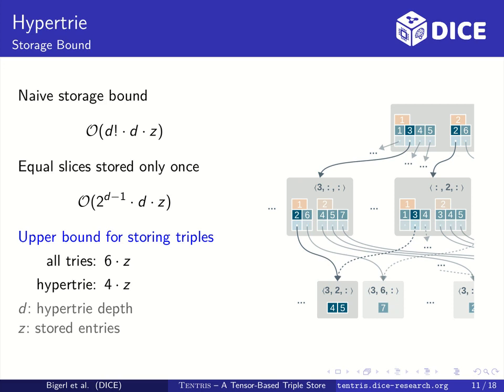The HyperTrie allows to slice by any combination of dimensions. To accomplish this, we would need, with traditional index structures like tries, one trie for each relation order of the dimensions, which means we need to maintain a factorial of the number of dimensions of tries. This leads us to the naive storage bound shown here. That is also the naive storage bound of a HyperTrie if each reference slice is stored separately.